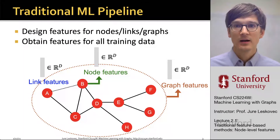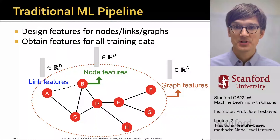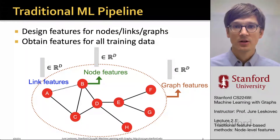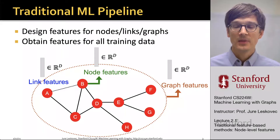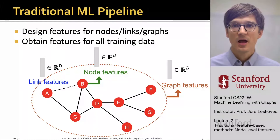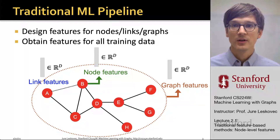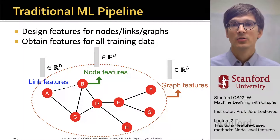The goal today is to especially focus on structural features that will describe the structure of a link in the broader surrounding of the network, that will describe the structure of the network neighborhood around a given node of interest, as well as features that are going to describe the structure of the entire graph, so that we can then feed these features into machine learning models to make predictions.